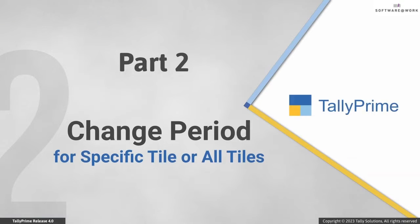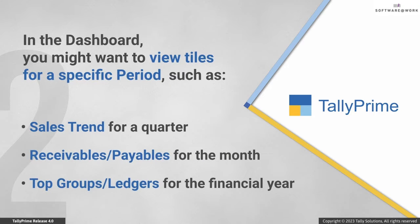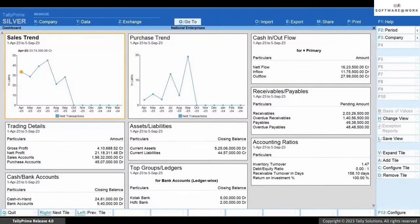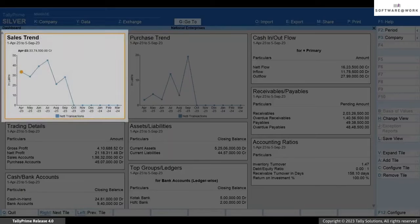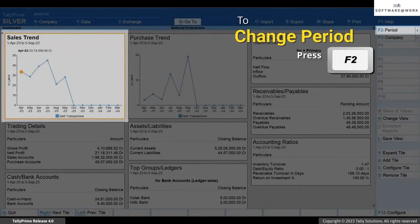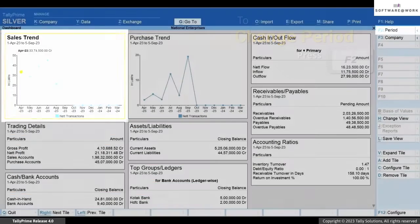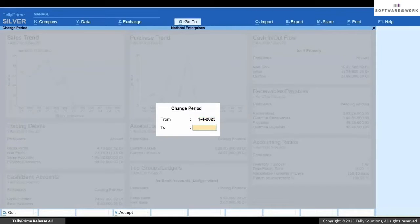Now let's see how to change the period of a specific tile or an entire dashboard. You might want to view the sales trend of a specific quarter, receivables/payables of the current month, and top groups/ledgers across the financial year. In such a case you can choose to change the period of specific tiles. To change the period of a specific tile, move the cursor to the tile and press F2 or Alt+F2, then enter the From and To dates and press Enter.